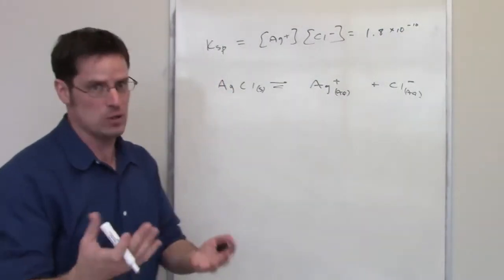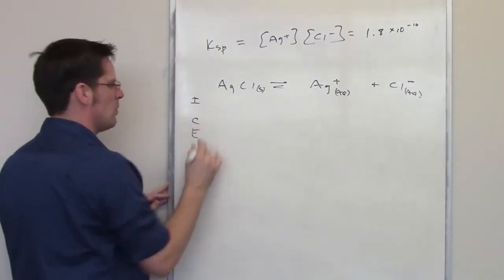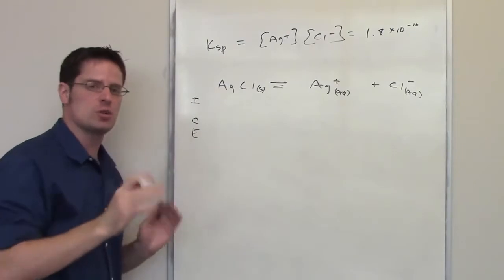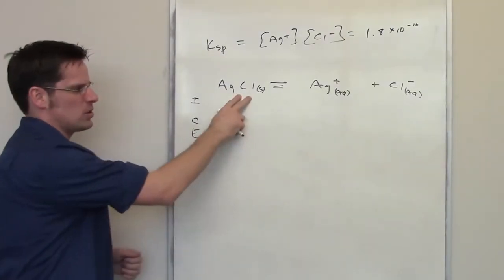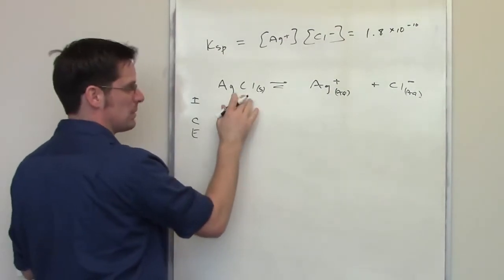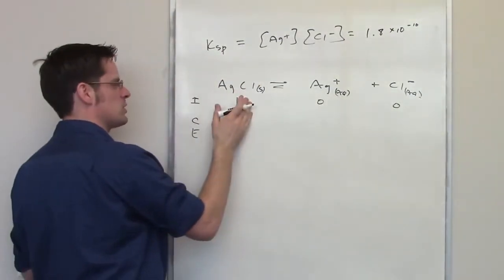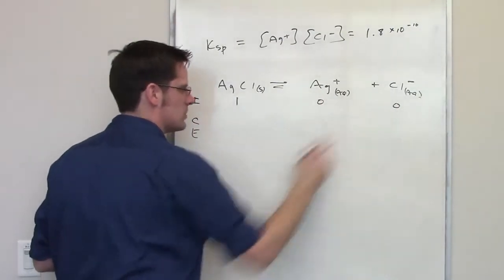Well, we actually do this question by doing an ice table. So I'll go ahead and write down ice here. And we'll begin by assuming that we have a concentration right at the beginning. When I take my silver coin and throw it into water, its concentration is going to be 100% and 0% over here. So I'm going to just assume an initial concentration of 1, 0, 0.